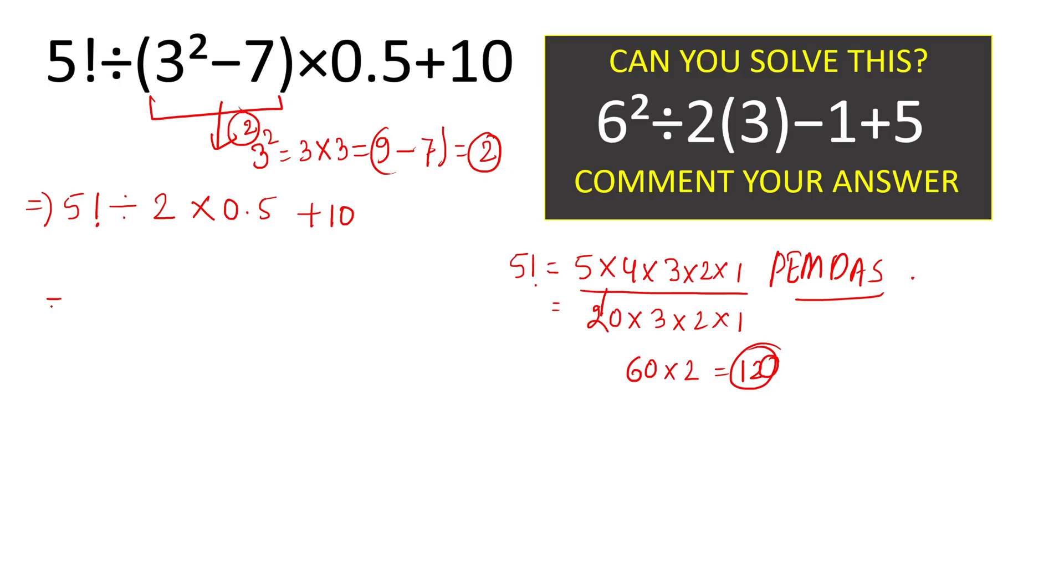We can simply write here 120 divided by 2 times 0.5 plus 10. Now here multiplication is in the same priority and addition has the second last which is lower than the multiplication division. So we will operate in a way like left to right here.